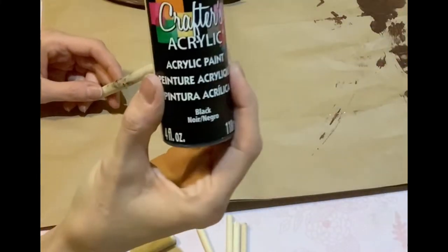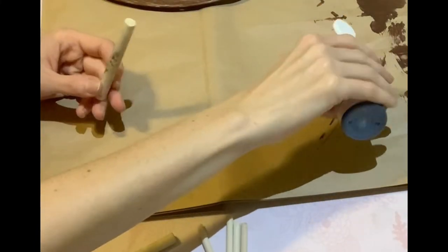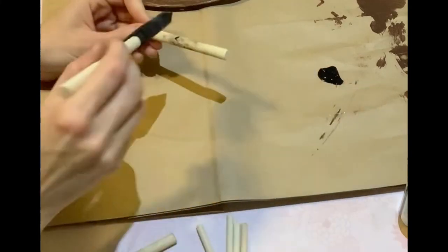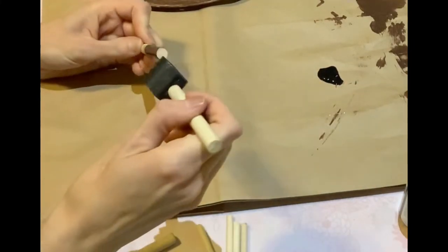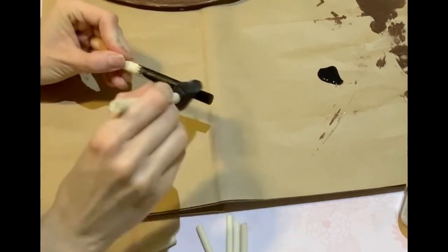Taking those old sponge brush handles, I didn't bother sanding them because they had some black on them and I'm actually painting them black.